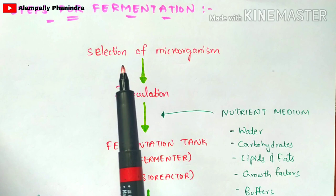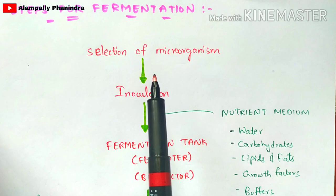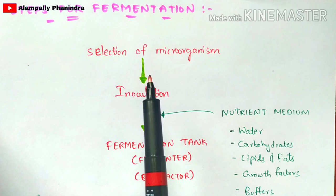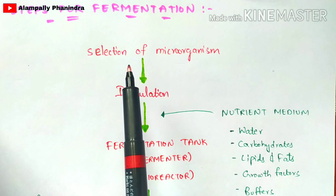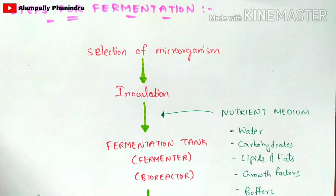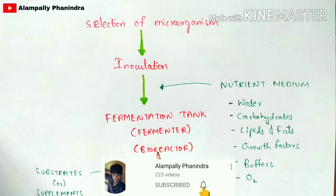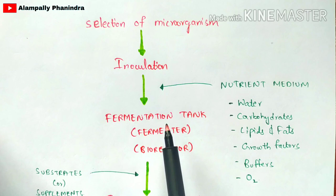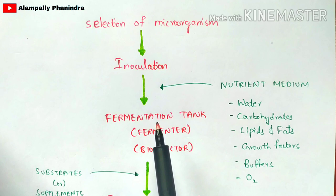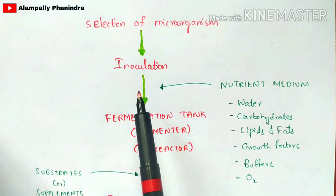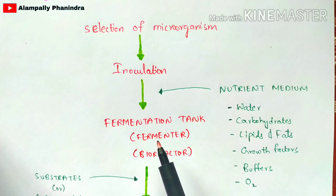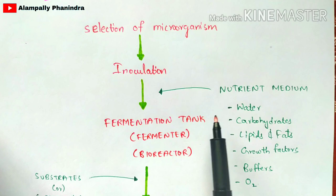Now let us see the steps of the fermentation process. First, you select a particular type of microorganism strain. For example, to produce lactic acid, take lactic acid bacteria; to produce citric acid, take Aspergillus niger. After selecting the strain, the fermentation tank — also called a fermenter or bioreactor — must be cleaned with water to prevent contamination of the microorganisms you are going to insert.